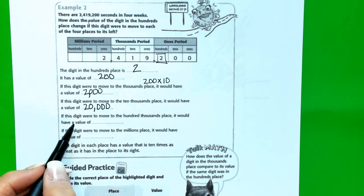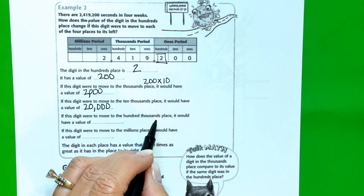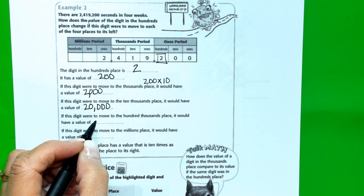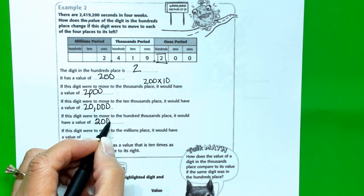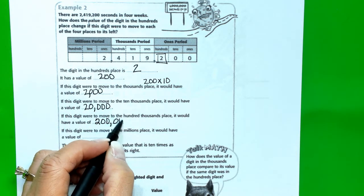And if this digit were to move to the hundreds place, it would have a value of 200,000.